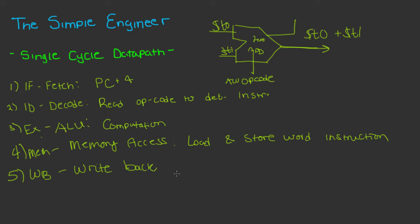The final stage is the WB stage — Write Back. This is where you store the output data into some register. For example, if the ALU output is five and we're storing it into register s1, we take that integer five in the Write Back stage and store it into s1. That's what happens in this final stage.